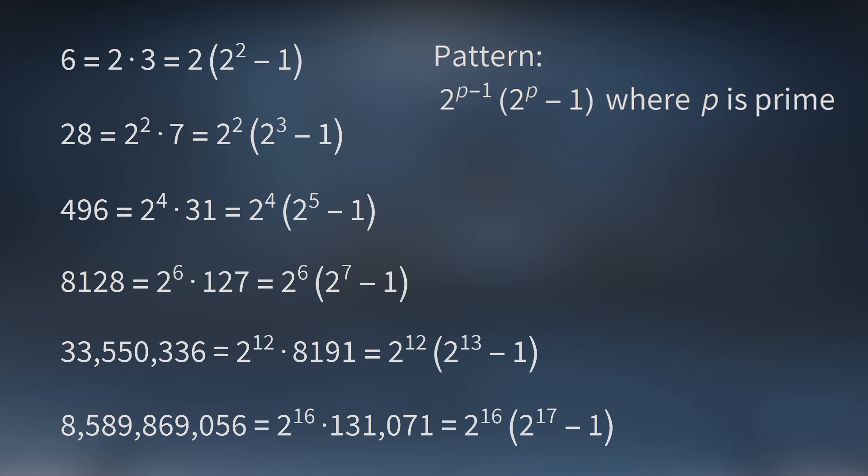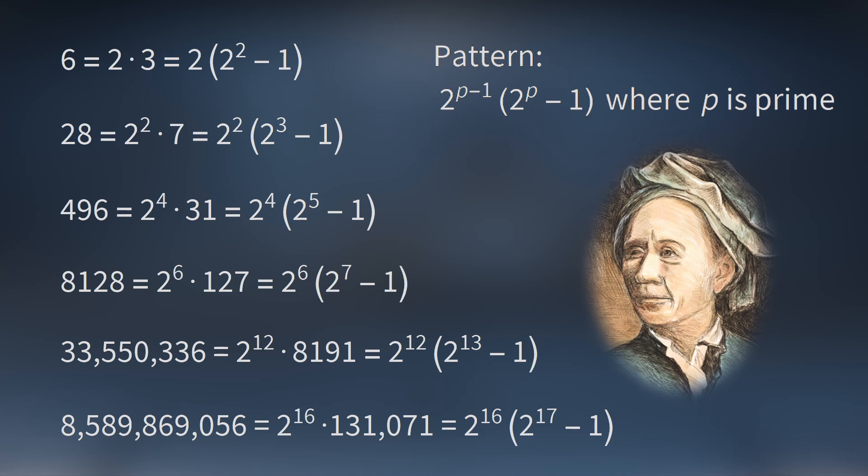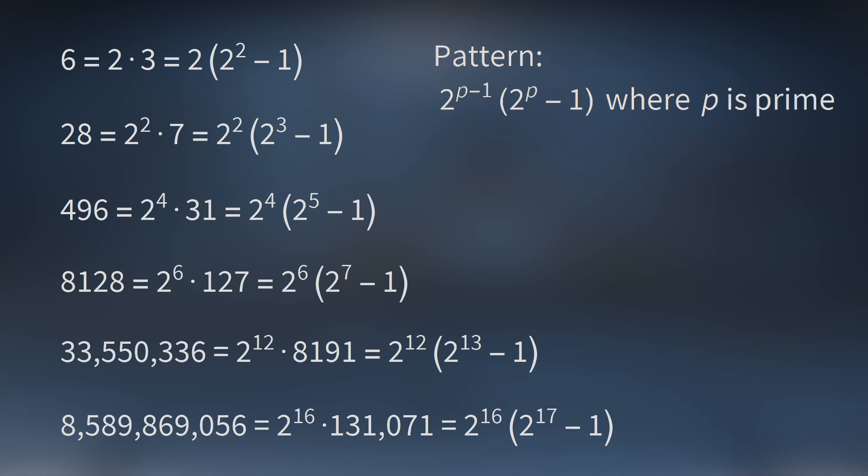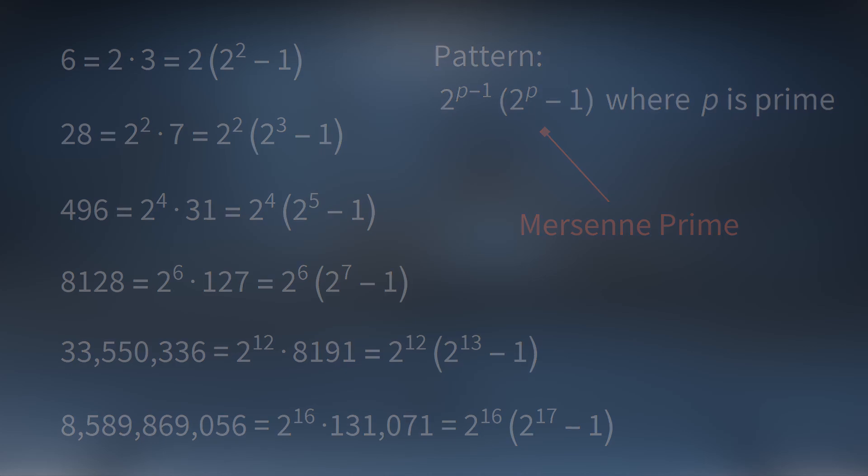If we go back to the time of Euclid, he showed that numbers of this form are perfect if the second part is a prime number. Euler showed that this is true of all even perfect numbers. If an integer is perfect and it's even, then it must take this form. And this prime number here we call a Mersenne prime. So for every Mersenne prime, you get a perfect number, and every even perfect number corresponds to a Mersenne prime. So this brings up the question, is there an infinite number of Mersenne primes? We don't know.